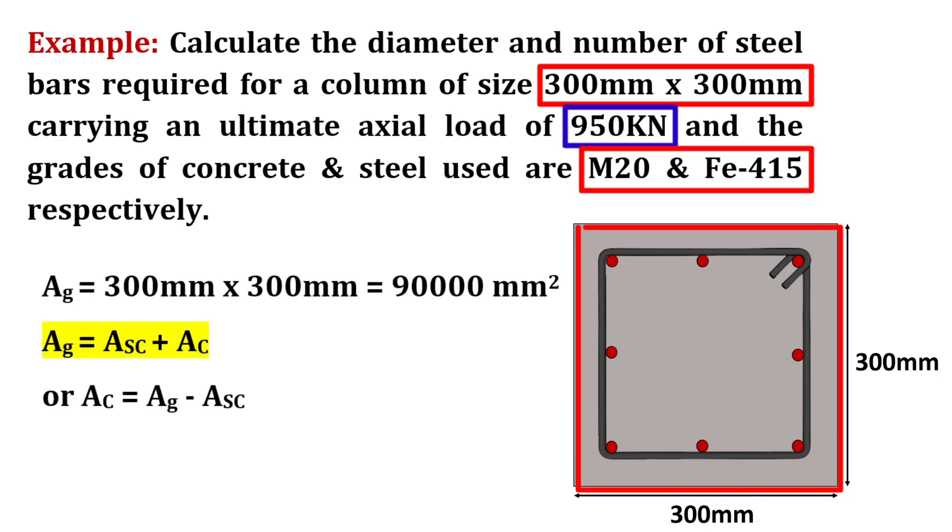The gross area of this column, that is area of cross section, will be equal to 300 mm x 300 mm and the total will be 90,000 mm square.